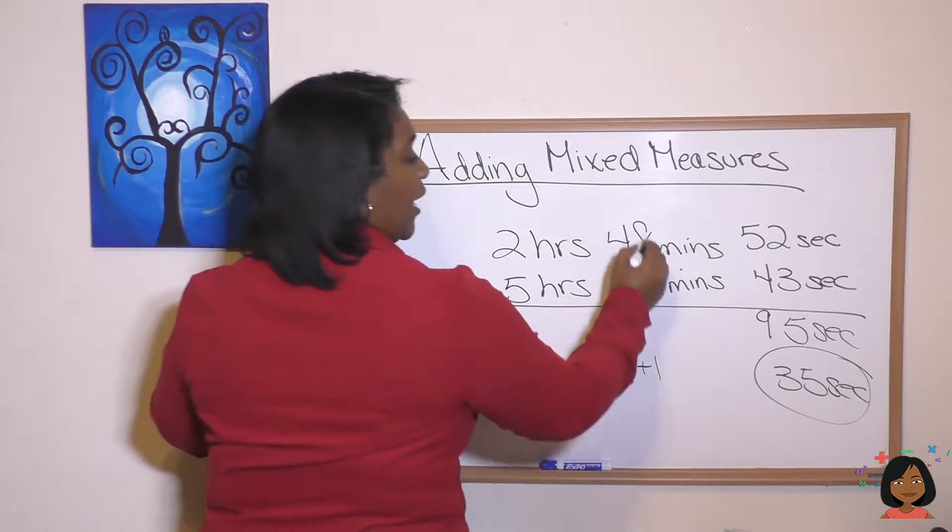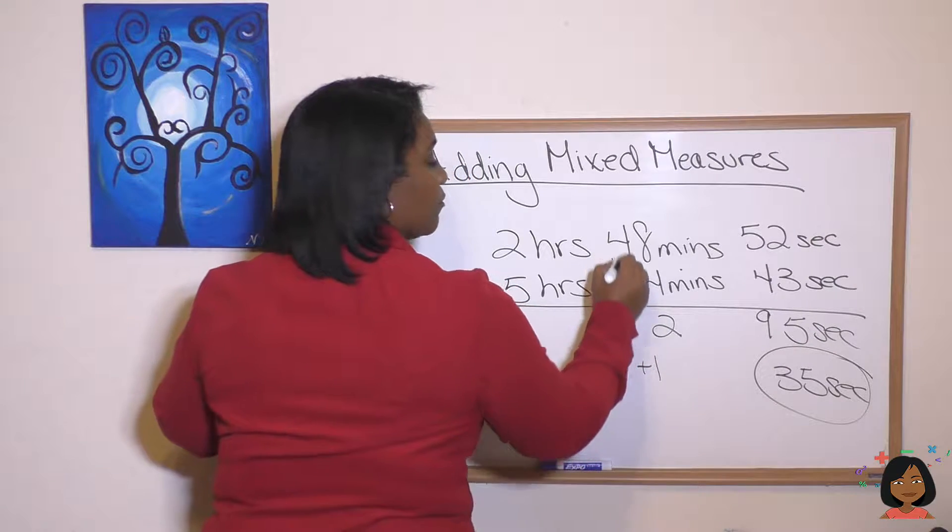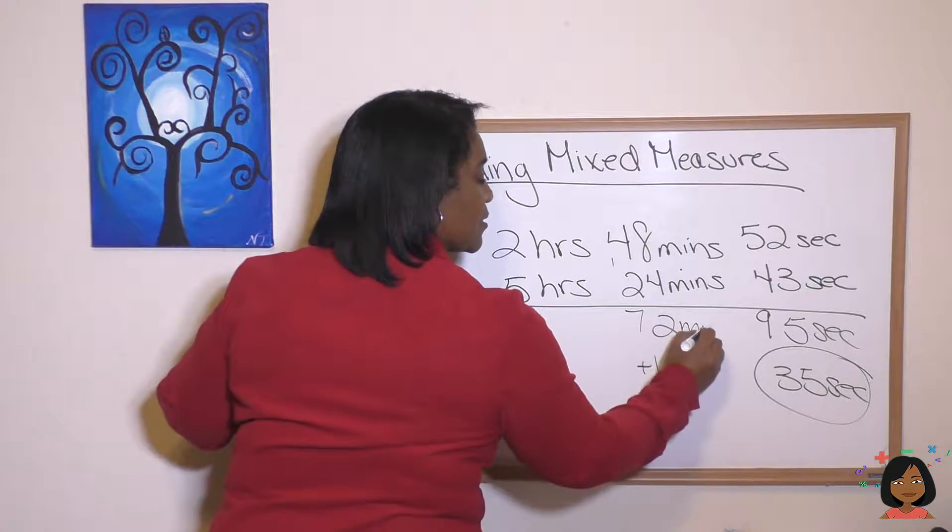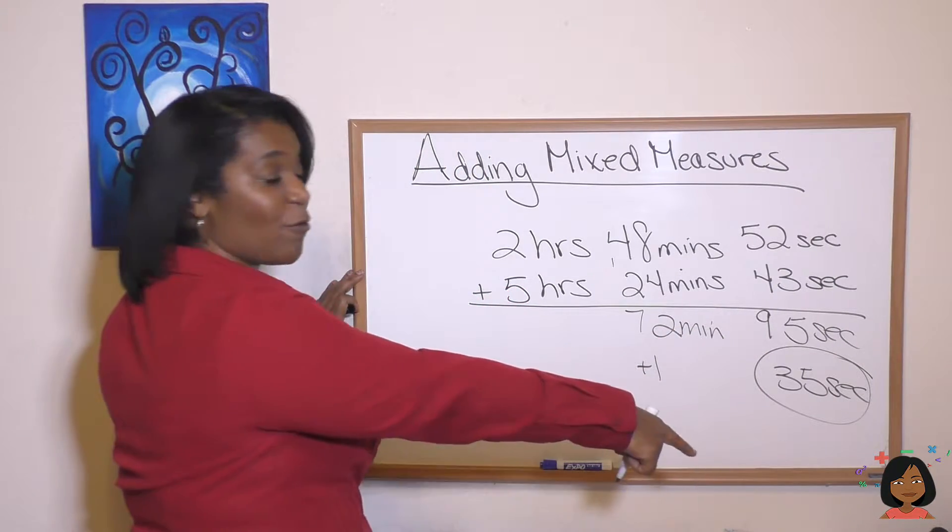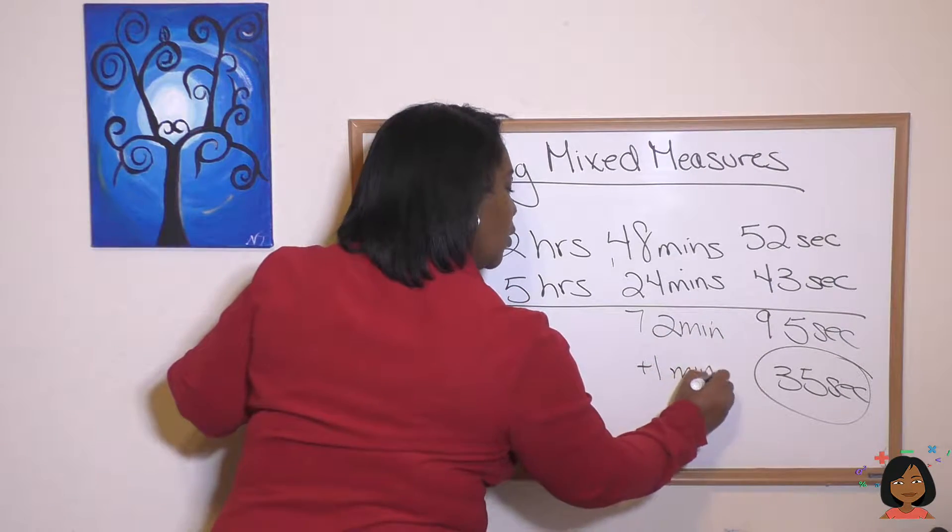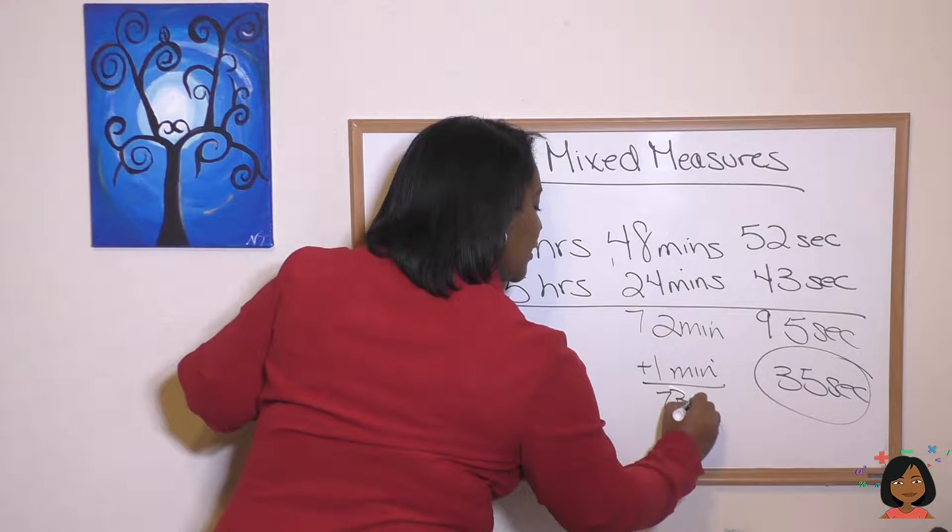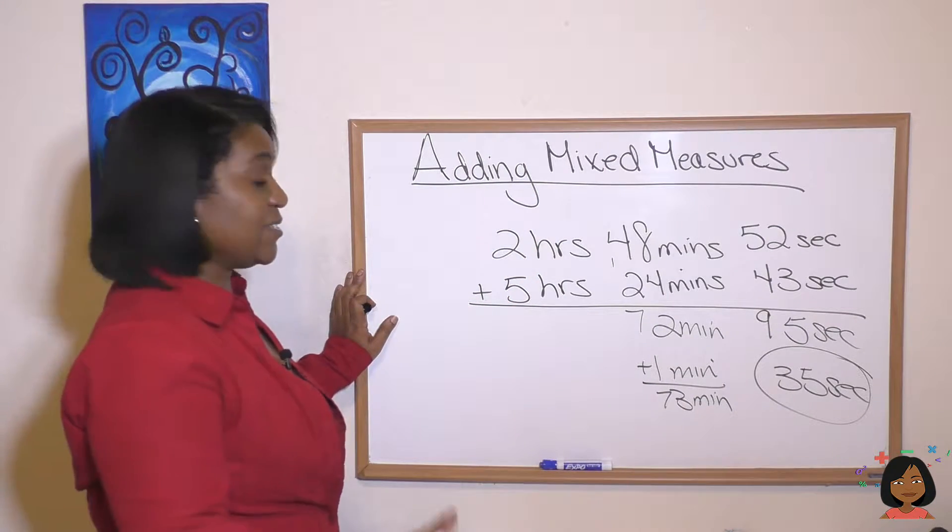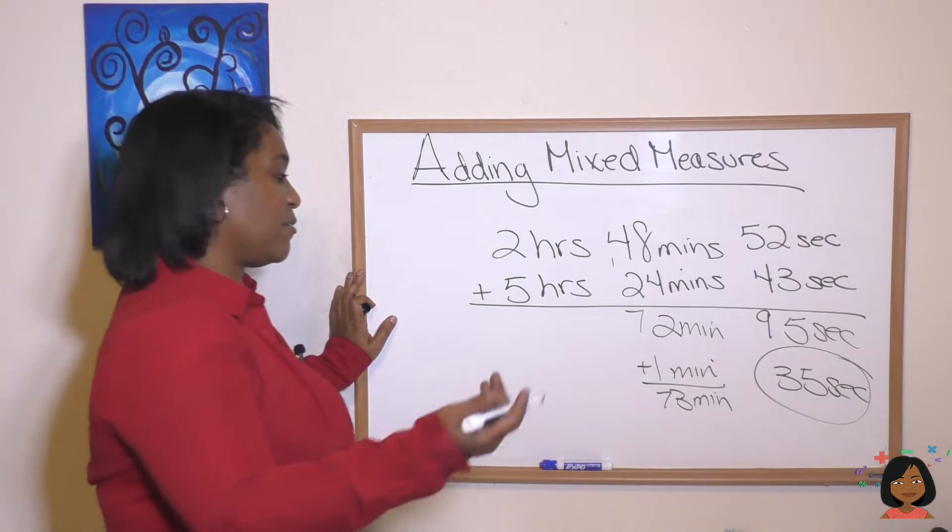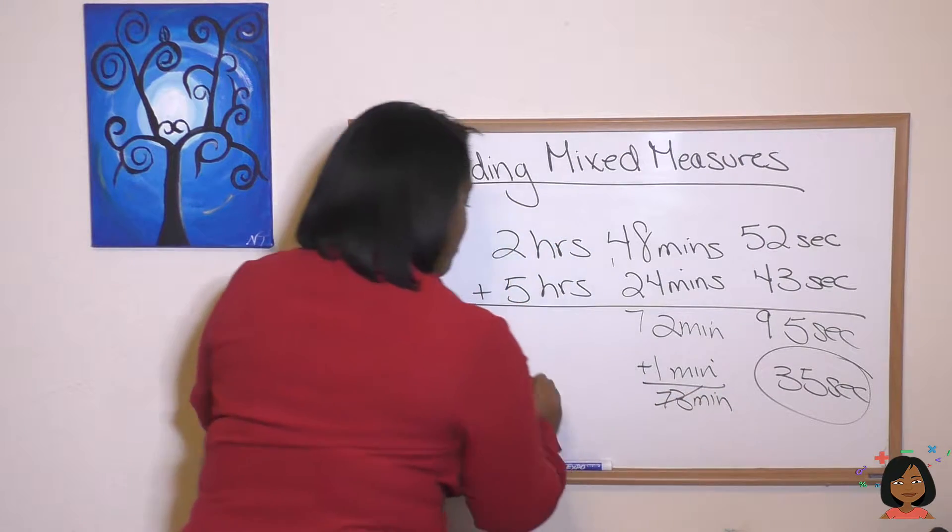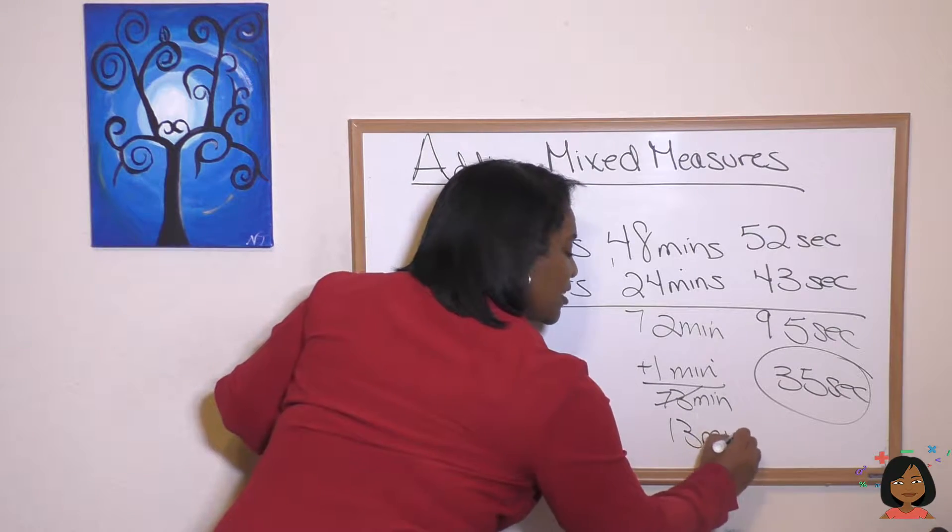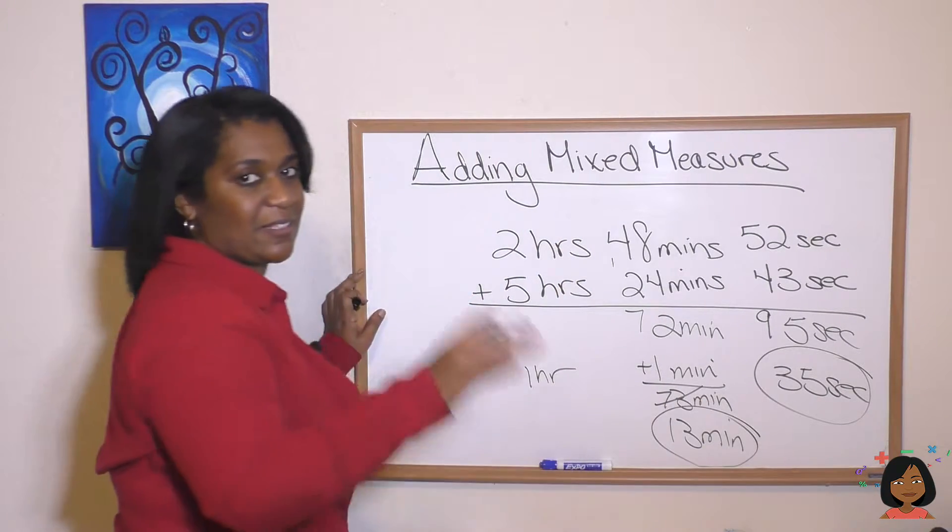Let's handle our minutes now. Eight and four is 12. Four and two is six, and one is 72 minutes, but I've got the one that came from over there, which gives me 73 minutes. But wait a second. We know that 60 minutes is an hour, so let's do a conversion there. So, we're going to cross this out, bring one hour over here, and we're left with 13 minutes, and I'm going to circle that because I know I'm done.